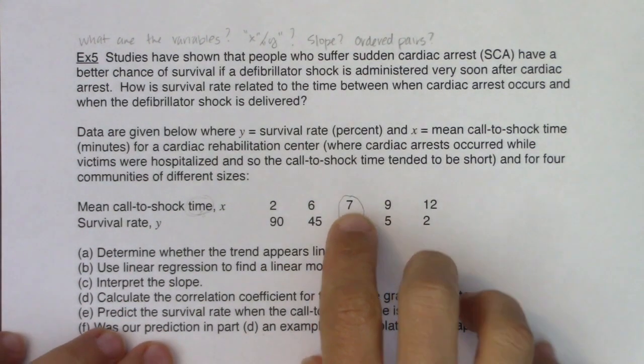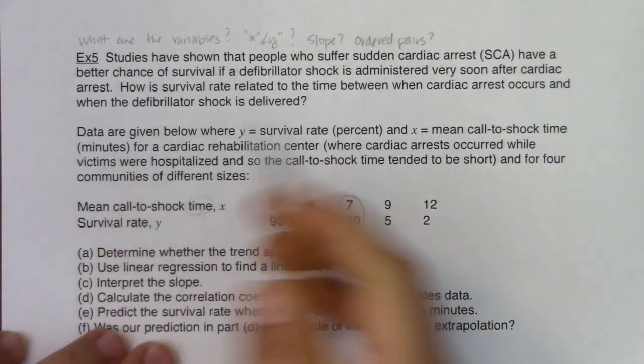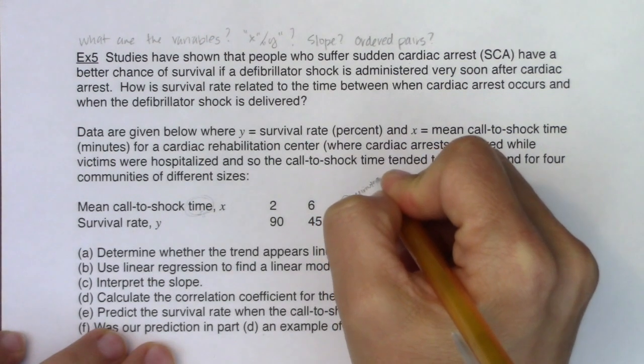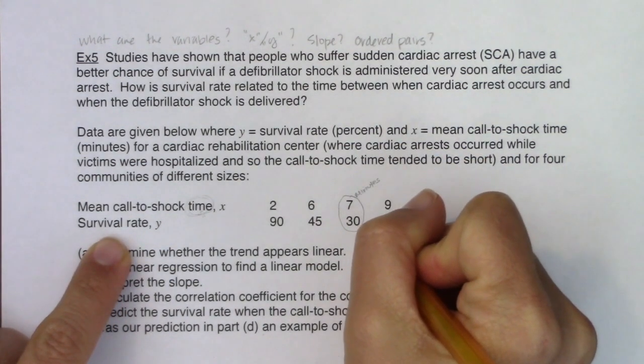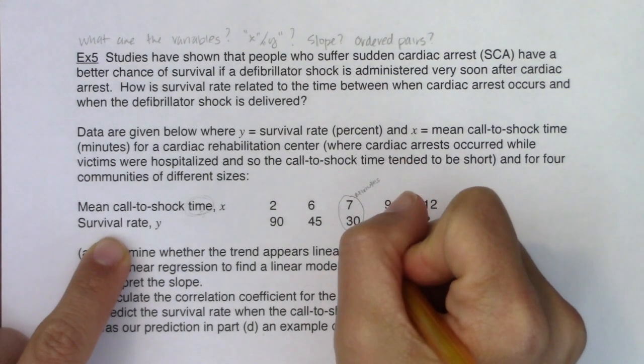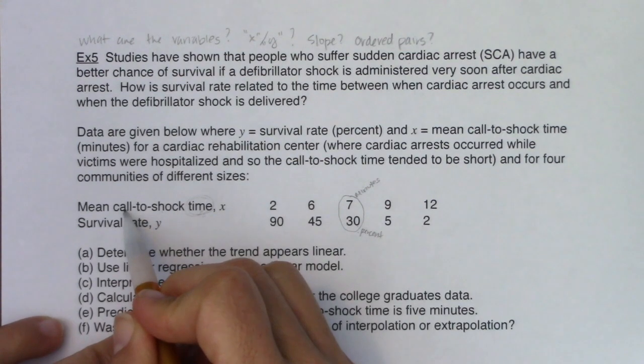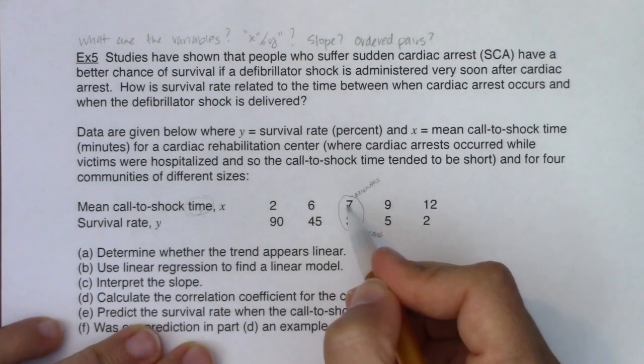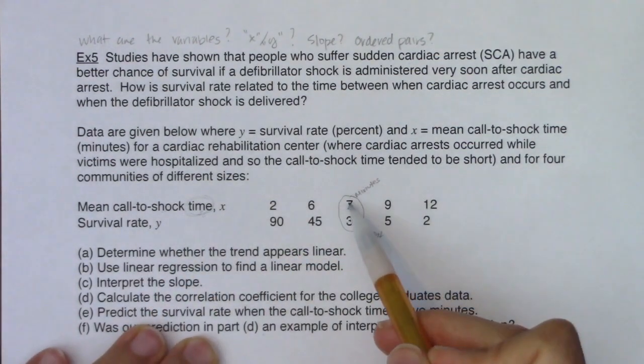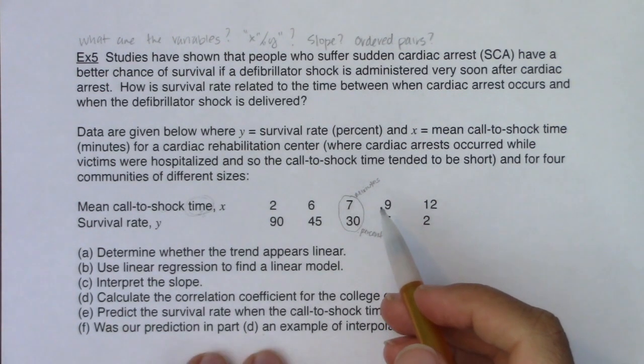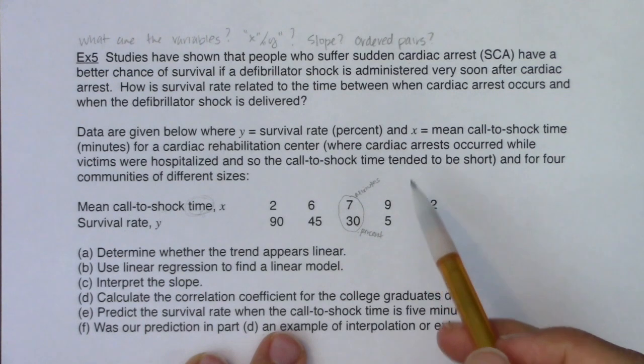I just want to take one of these apart just so before we get going on the nitty-gritty of the problem, we understand what's happening. What does the seven represent? What does the 30 represent? This was an x value. And the units on x, if we look, they were minutes. So this is seven minutes here. Now let's look at the units on the 30. This was a survival rate. And they told me the units on that were a percent. So I've got seven minutes, 30%.